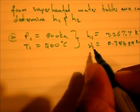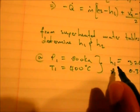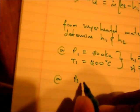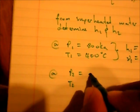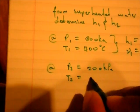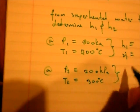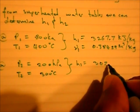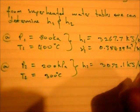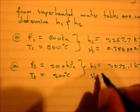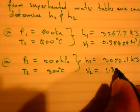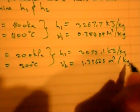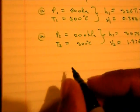Now we need specific volume because we cannot get V2 without it - we need this volume to calculate h2. Now we say at P2 and T2, P2 is 200 kilopascals as given and T2 is 300 degrees Celsius. We have h2 is equal to 3072.1 kilojoules per kilogram and specific volume 2 is equal to 1.31623 cubic meters per kilogram. Now this is where the fun stuff starts.